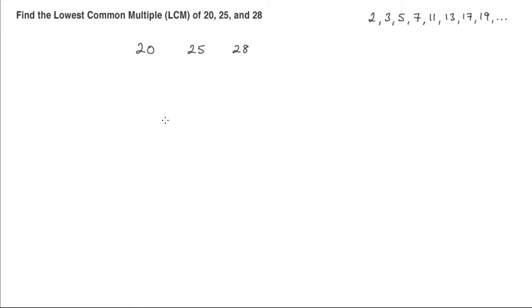We do it upside down. By upside down, I mean we draw the little bus stop that you're probably used to. What we do is choose the first prime number that will go into any of these three values here.